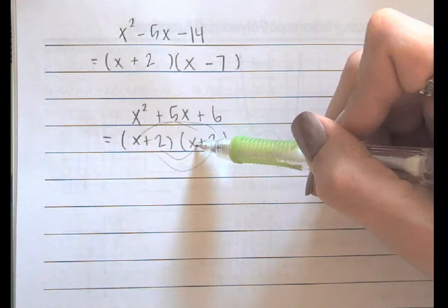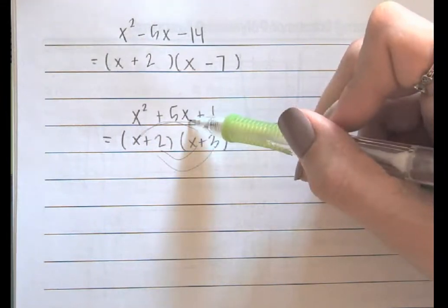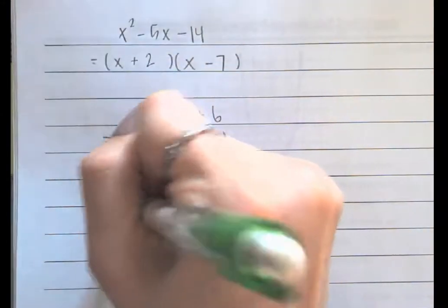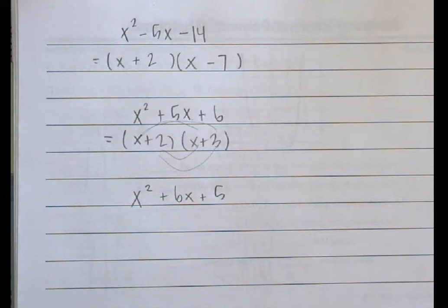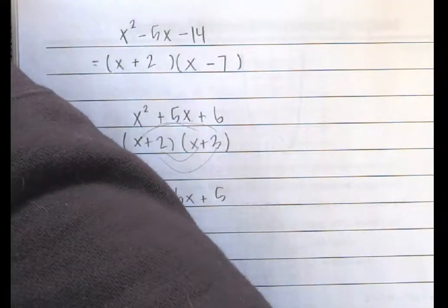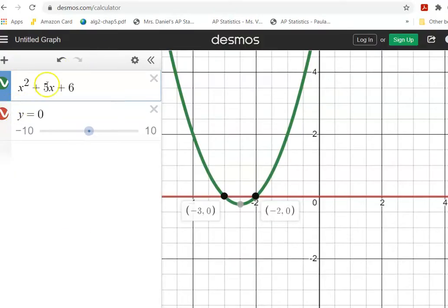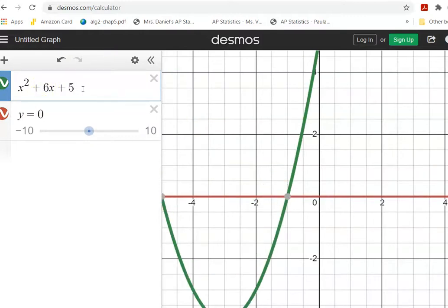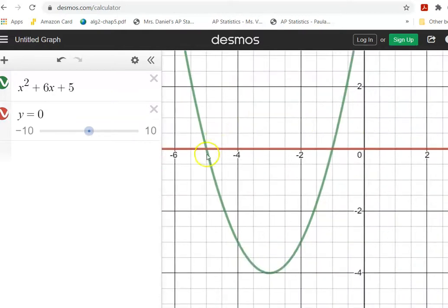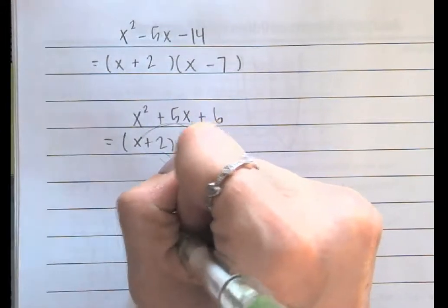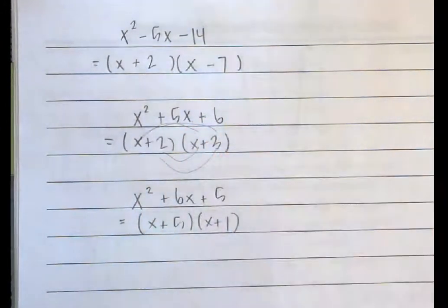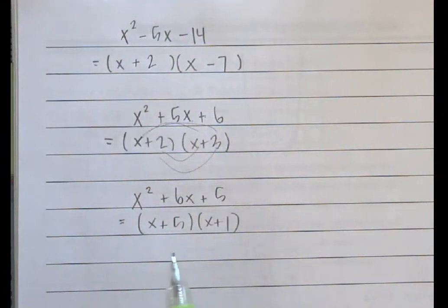We're breaking it down into the two binomials that we multiplied together to get this expression. Now let's do one that looks very similar: x squared plus 6x plus 5. Back to Desmos — I'm going to change this to a 6 and this to a 5. In this case, we are getting negative 5 and negative 1. So once again, we plug in the opposite: plus 5 and plus 1. Your order does not matter — it doesn't matter which one you put first.